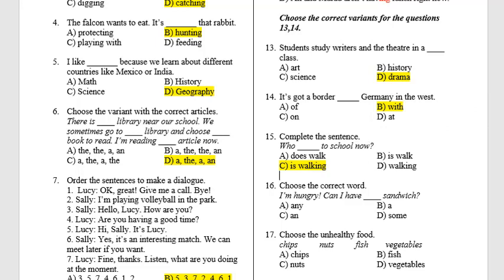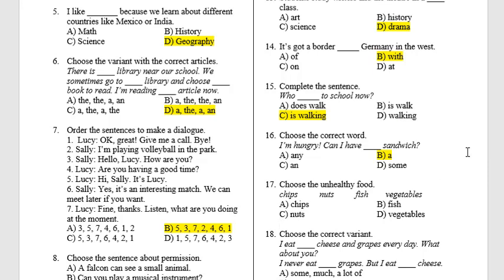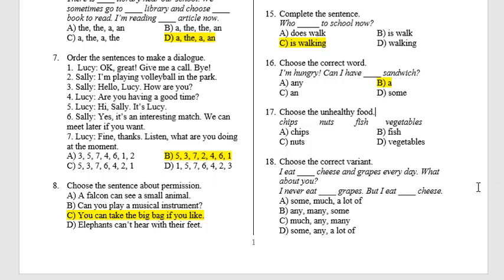Question 16: Choose the correct word. B. As you can see, 'sandwich' is singular and it is a countable noun. So, the variants 'any' and 'some' are incorrect because after 'any' and 'some' we use countable nouns in the plural. And variant C is incorrect as well because the word 'sandwich' starts with a consonant sound. Question 17: Choose the unhealthy food — Chips. Because fish, nuts and vegetables are healthy food.